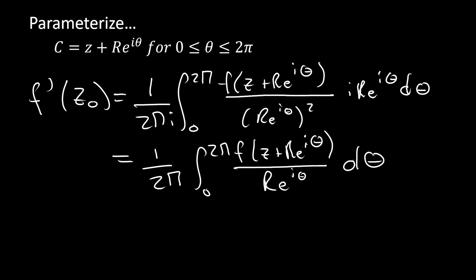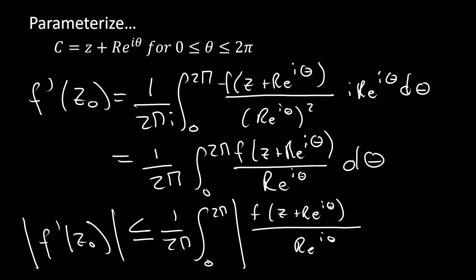So now from this point we can take the modulus of what we have here, of f prime of z at z0, and we know that's going to have to be less than or equal to something because this is a modulus here, and I'll detail where this comes in. But what we really are going to get is we're going to get a 1 on 2 pi, integral on bounds 0 to 2 pi, and then we're going to be taking the modulus of this inner part f of z plus R e to the i theta on R e to the i theta, and we're taking the modulus of this thing right here. Now when we do that, we're going to get the following out. And so really we just need to take and figure out what the modulus of this function in the numerator of our integrand is going to be.